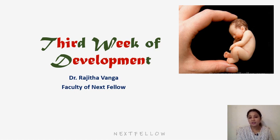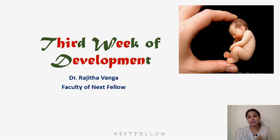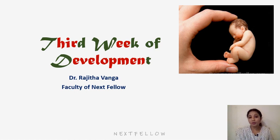Prior to the third week it is considered the conceptus, and beyond the eighth week it is a fetus. During this period we see the development of three germ layers — ectoderm, mesoderm, and endoderm — which give rise to their own tissues and organs. As a result of organ formation, major body features are established, and by the end of the embryonic period the embryo will resemble a small miniature human.